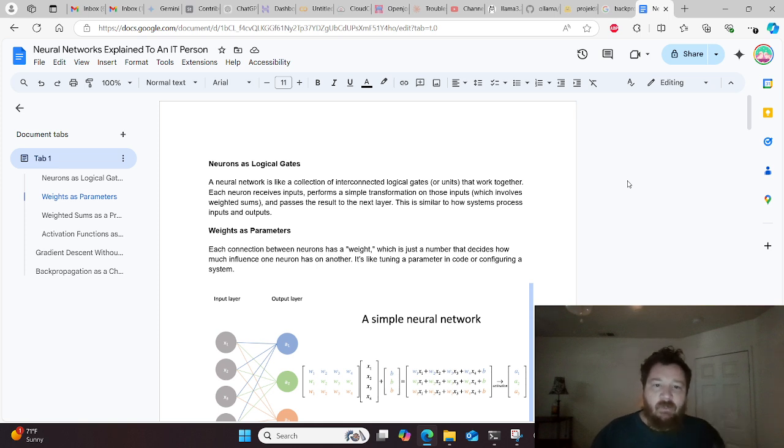Starting off, let's frame neurons as logical gates. A neural network is like a collection of interconnected logical gates or units that work together. Each neuron receives inputs, performs a simple transformation on those inputs which involves weighted sums, and passes the result to the next layer. This is similar to how systems process inputs and outputs. Using weights as parameters, each connection between neurons has a weight, which is just a number that decides how much influence one neuron has on another. It's like tuning a parameter in code or configuring a system.